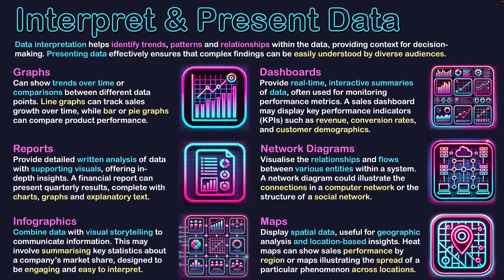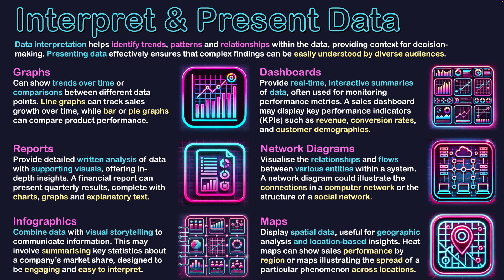The final one is maps. Maps display spatial data useful for geographic analysis and location-based insights. We can apply colorization tools to highlight certain demographics or regions — for example, heat maps can show sales performance by region, or maps illustrating the spread of a particular phenomenon across locations, such as a weather pattern moving across a state or country. Stores doing well might be highlighted in red showing hot sales, while stores in slower areas might appear in blue.